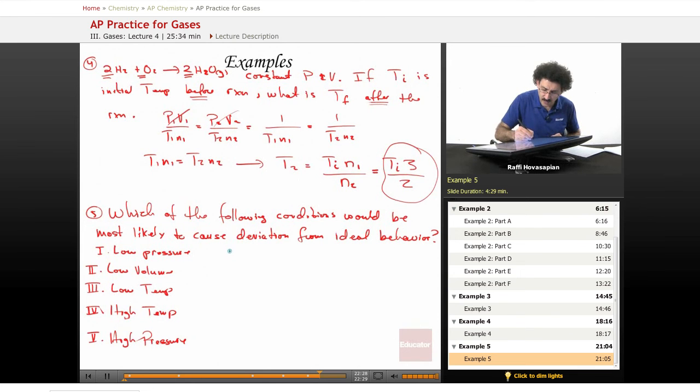Okay. So our choices are: A, one only; B, two and three only; C, two, three, and five; D, one and four; and the final choice, E, is five only.